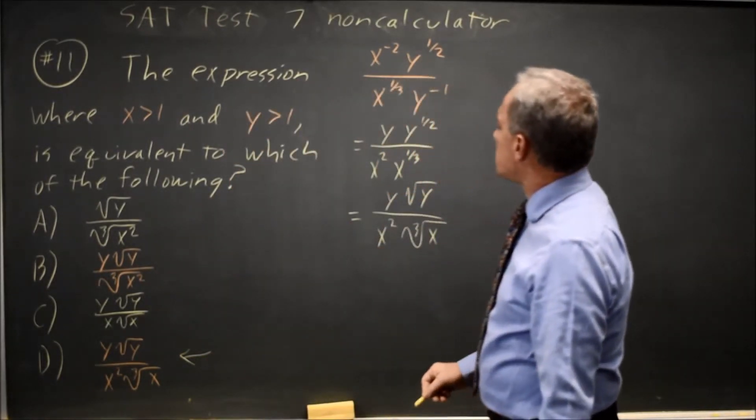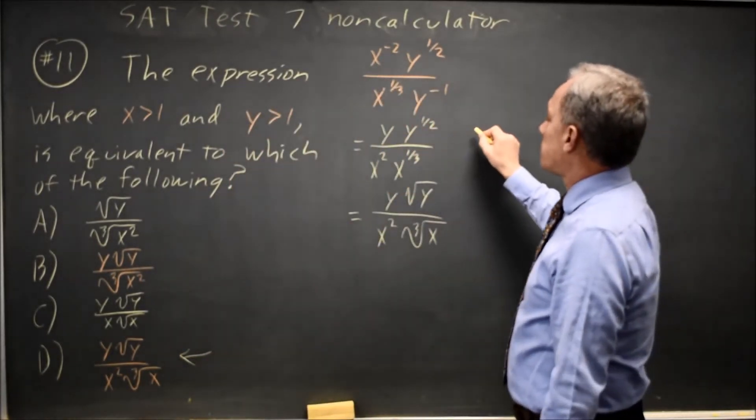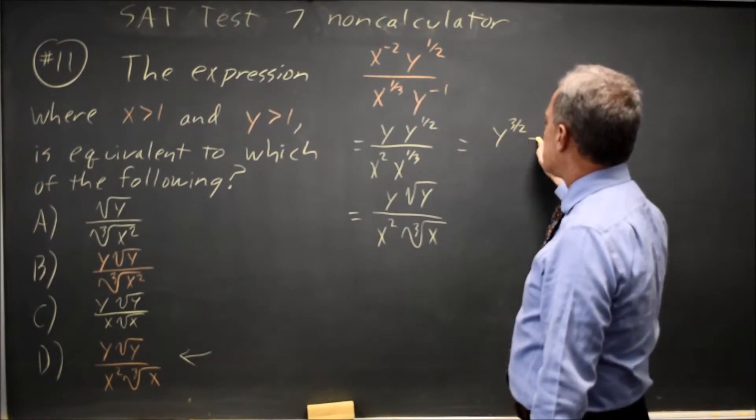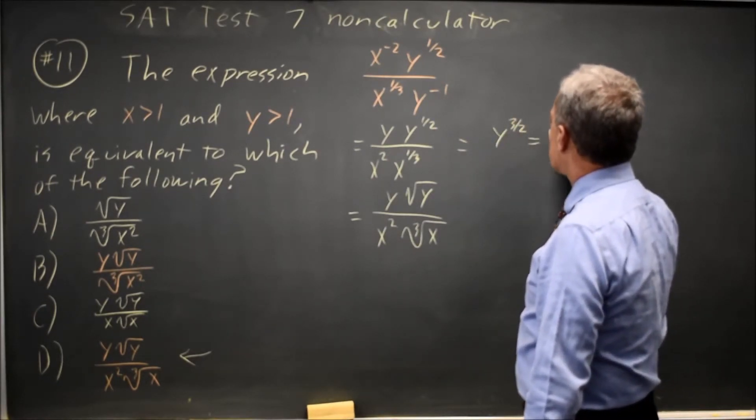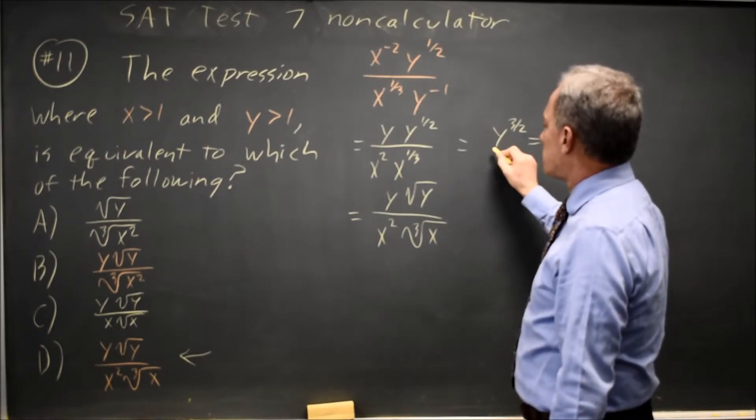If I combine the y with the y to the 1 half, that would be y to the 3 half, which is square root of y cubed, but that's not one of our choices.